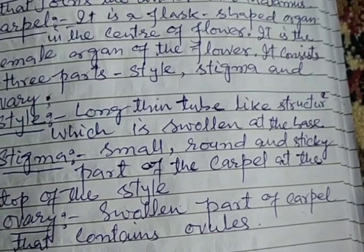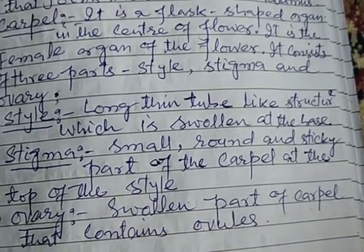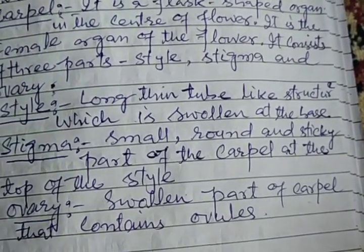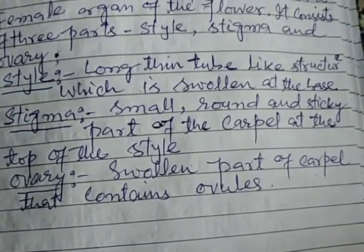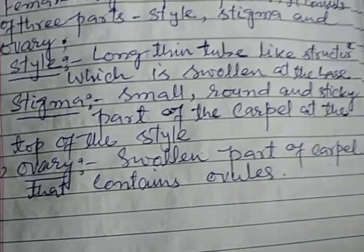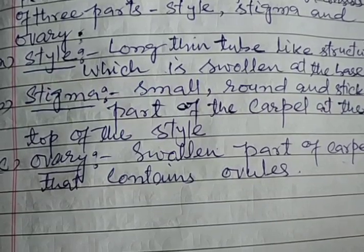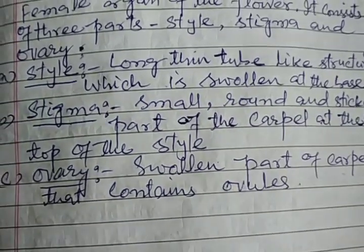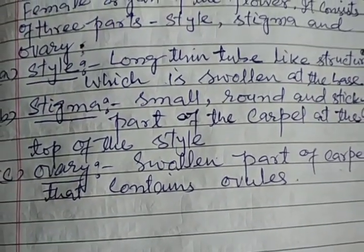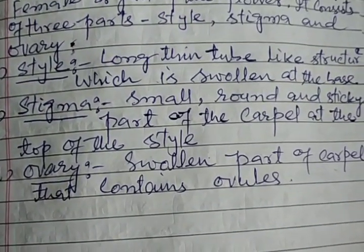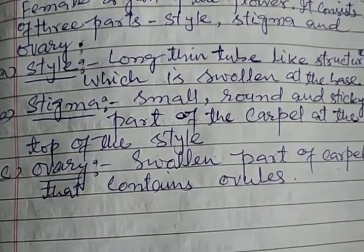The stigma is small, round, and sticky. The ovary is the lower part of the carpel and contains ovules.